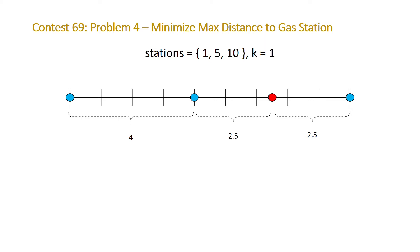If we change k to 2, it's still pretty clear that we need to add our gas station to the first interval in between our first and second gas station. And if we do that, the following happens, and now our maximum distance is equal to 2.5.